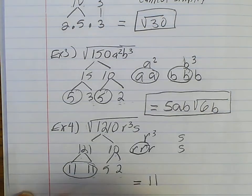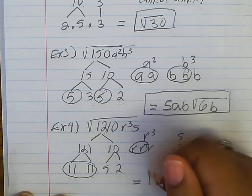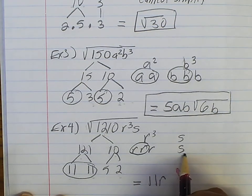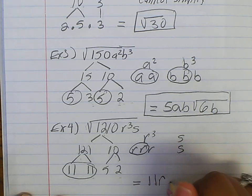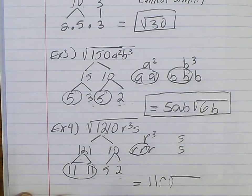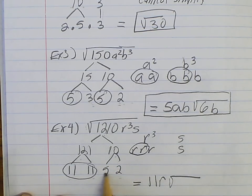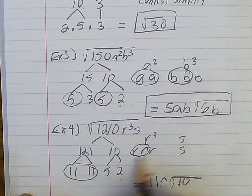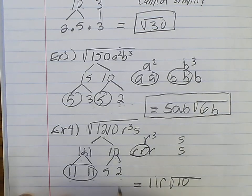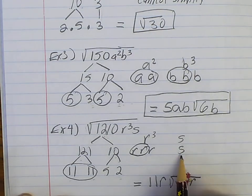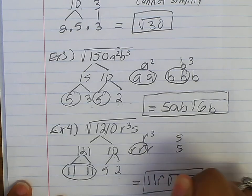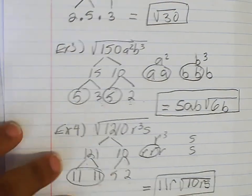I can pull out an 11. Then for the r's, I can circle two of them and pull out one r. For the s, I only have one so it stays in the radical. Now back to my numbers — 5 times 2 is 10, which goes inside the radical. I have one r left, so I bring down one r, and I bring down the s. Final answer: 11r√(10rs). That's it!